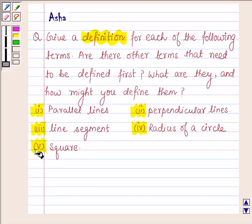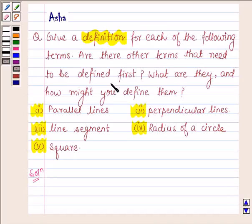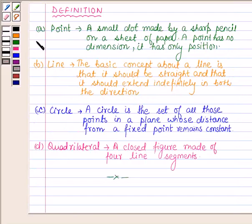And the fifth one is a square. Let us now begin with the solution. Some other terms which need to be defined first before defining the given five terms are point, line, circle, and quadrilateral.